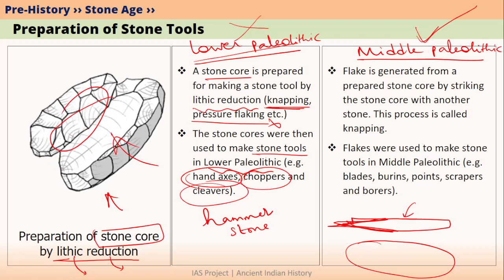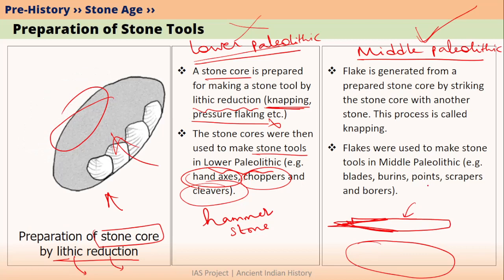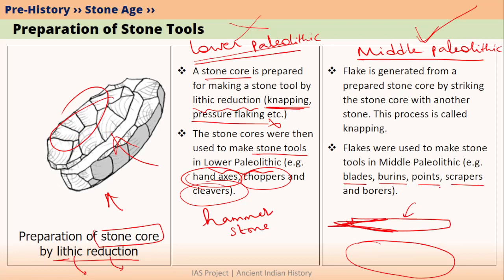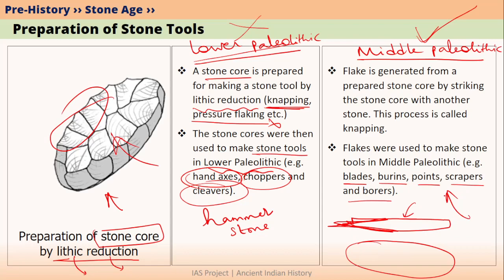In Middle Paleolithic, flakes were used to make tools called blades, burins, points, scrapers, and borers. We will talk about this in our Middle Paleolithic video, which will be the next video.